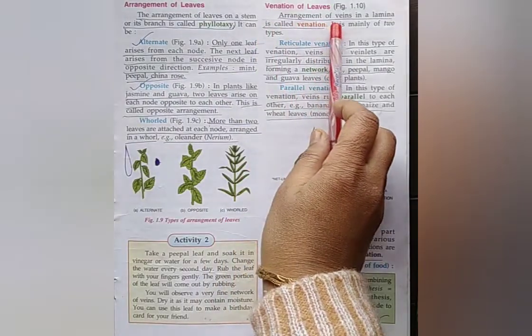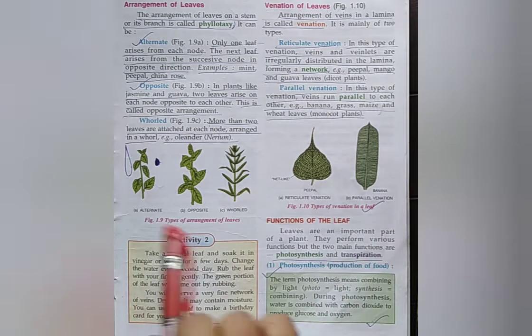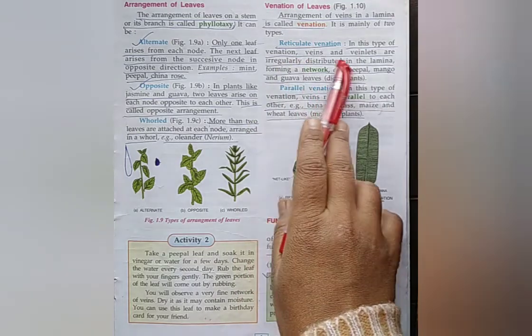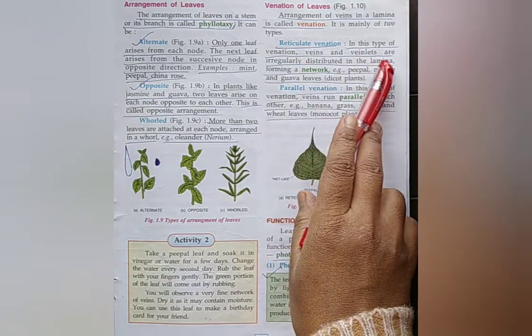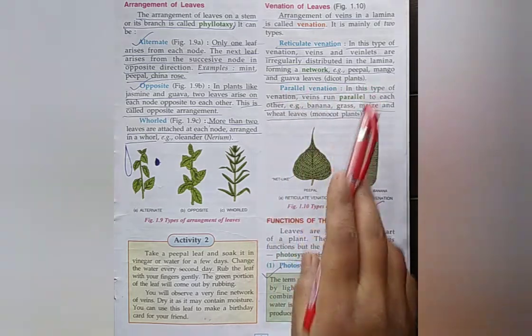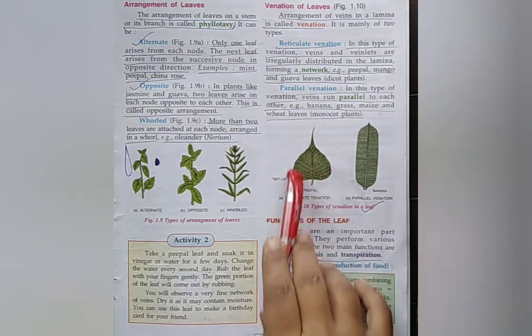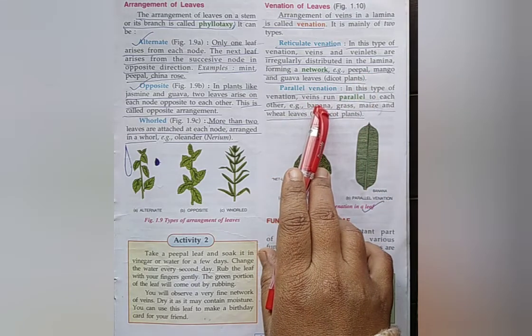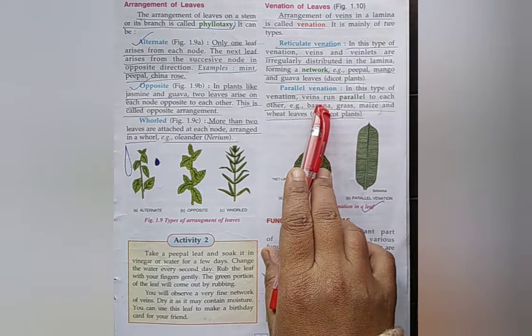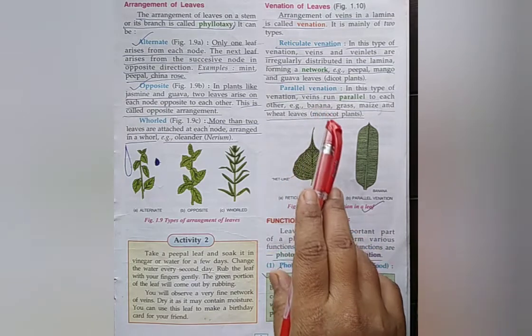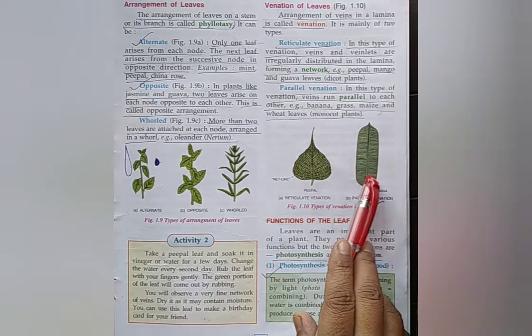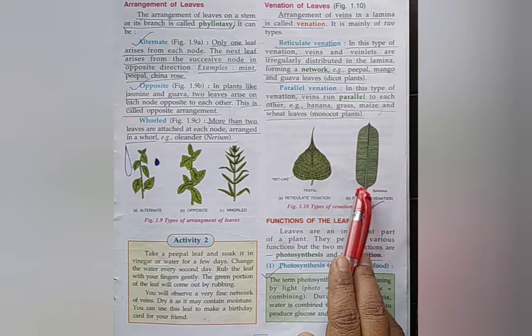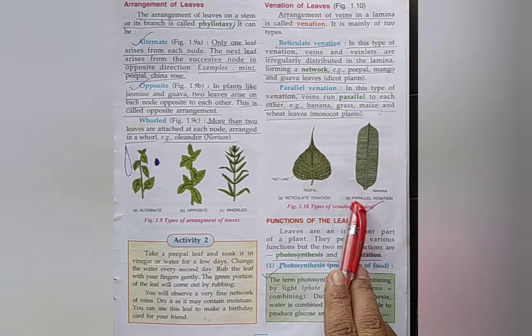What is venation? Arrangement of veins in a lamina is called venation. It is mainly of two types. What is reticulate venation? In this type of venation, veins and veinlets are irregularly distributed in the lamina forming a network. Example: Peepal, mango, and guava leaves, dicot plants. What is parallel venation? In this type of venation, veins run parallel to each other. Example: Banana, grass, maize, and wheat leaves, monocot plants.